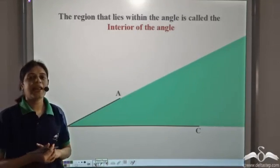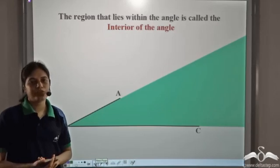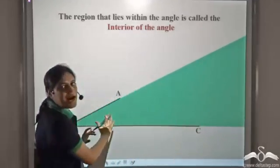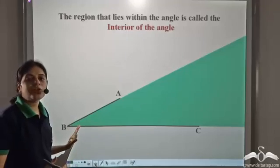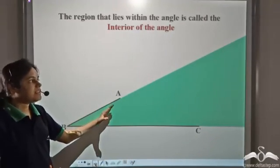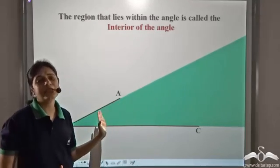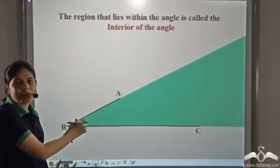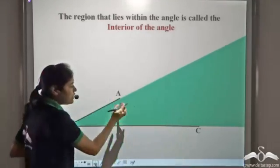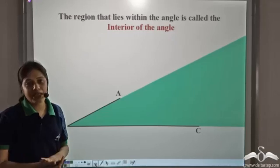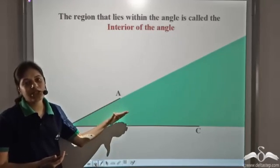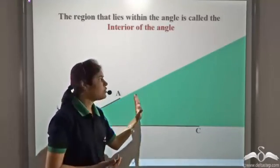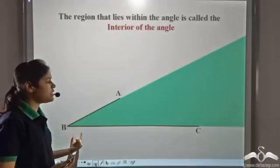The region that lies within an angle is called the interior of the angle. So if we look at angle ABC, this entire green shaded region is the interior of angle ABC. We see that this region extends indefinitely — it extends forever. Even if the angle is made up of line segments AB and BC, which are of finite length, the interior of the angle still extends infinitely.